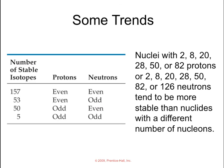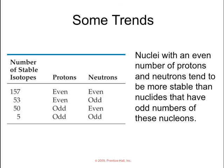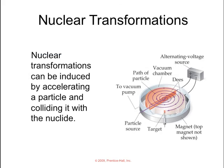This you do not need to know, but I thought it was kind of interesting. There are some trends. Nuclei that have 2, 8, 20, 28, 50, or 82 protons or 2, 8, 20, 28, 50, 82, or 126 neutrons tend to be more stable than nuclides that have a different number. Even number of protons and neutrons also tend to be more stable than those that have odd numbers. Just interesting.